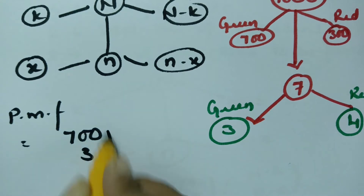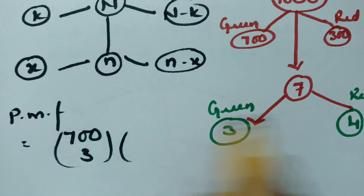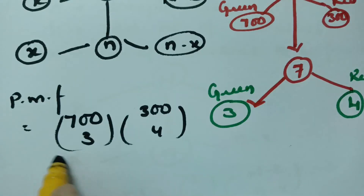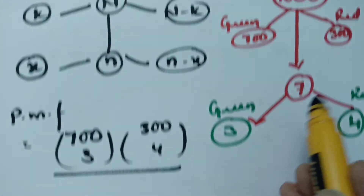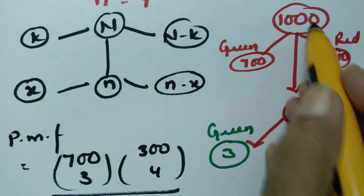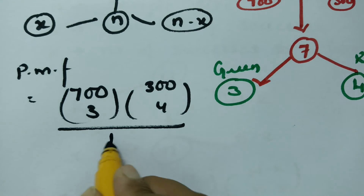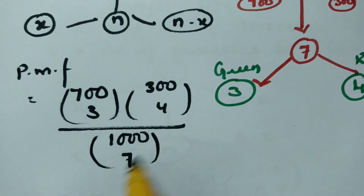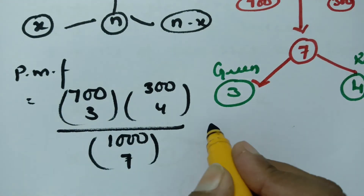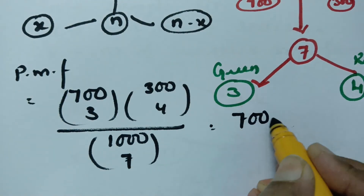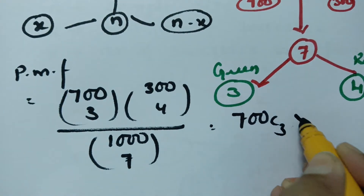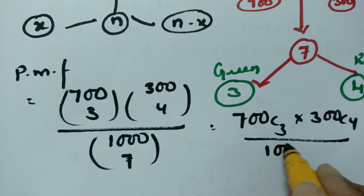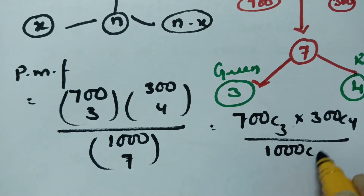So the probability mass function can be written as: 700·C3 × 300·C4 divided by 1000·C7.